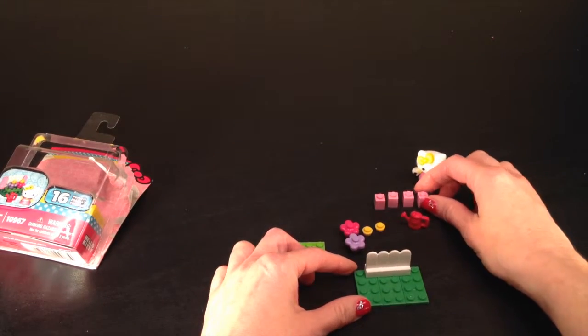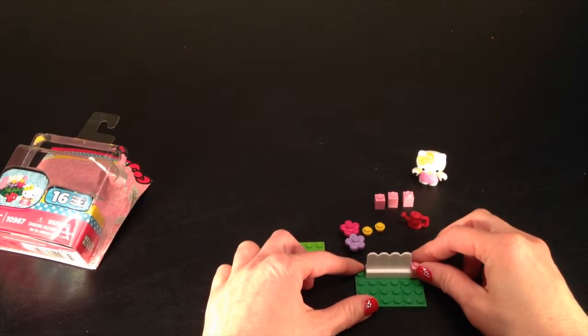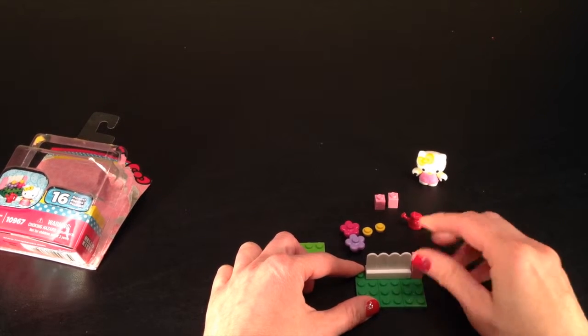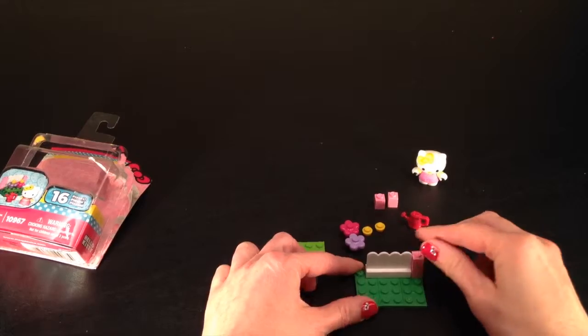Next we are going to build our pretty pink fence posts. And two pink pieces go on each side of our pretty white fence.